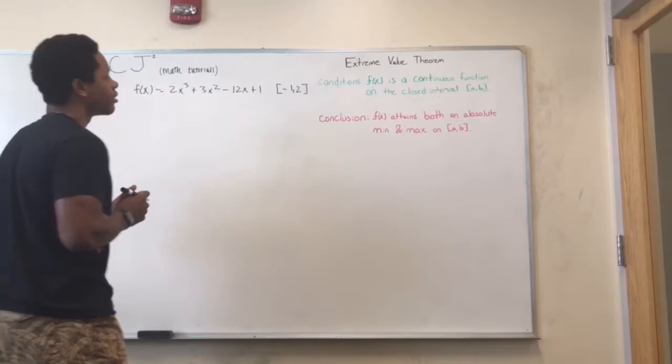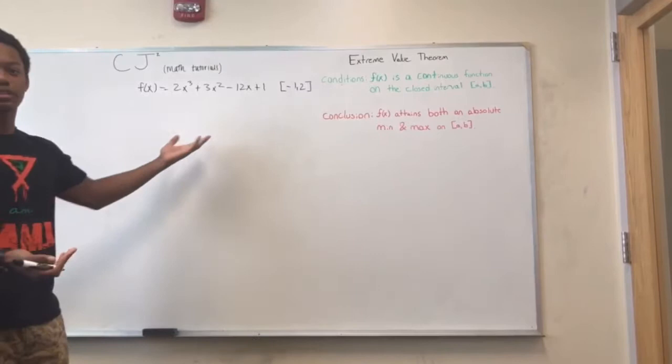First we need to see if the function is continuous and we can clearly see it's continuous because it's a polynomial. And it's also on a closed interval which is from negative 1 to 2.